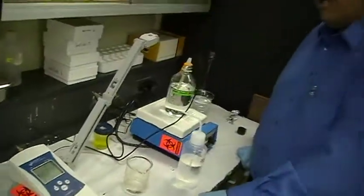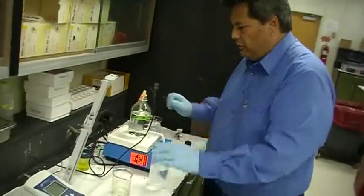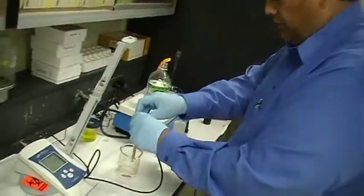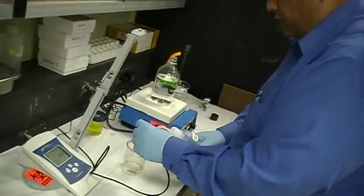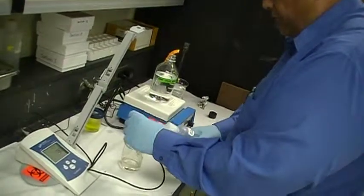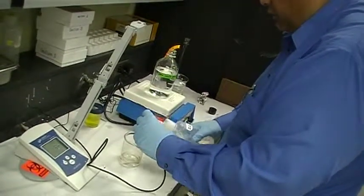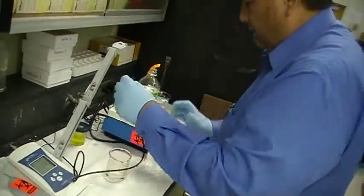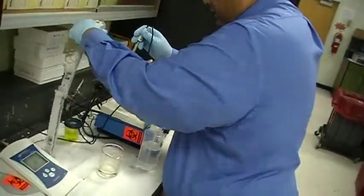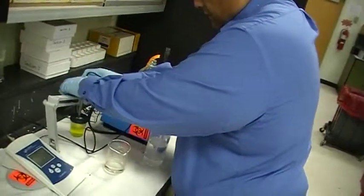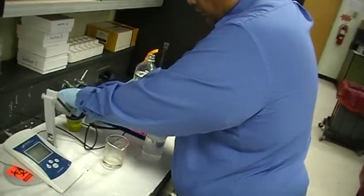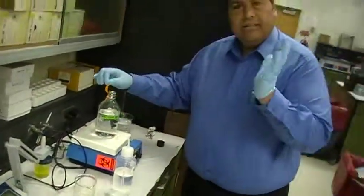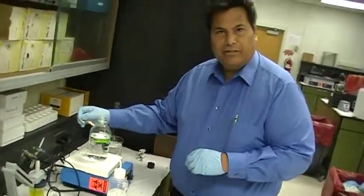So that's how you use the pH meter and when you finish, take it out of your buffer. Again, you provide this for washing. So rinse it off very, very thoroughly with deionized water using this squirt bottle and then you put it in the arm and you store it in the storage either standard solution or potassium chloride solution. And that's how we use the pH meter. Thank you.